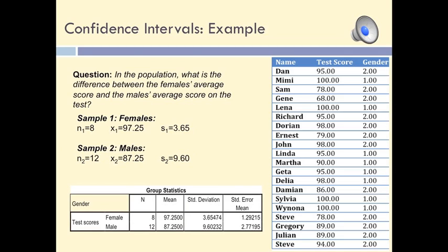We must, however, have a categorical variable which shows to which group every individual belongs to. In this example, the categorical variable is gender. The value 1 is used for females, and the value 2 is used to designate males. This is called our grouping variable because it shows to which group, or to which random sample, every individual belongs to.